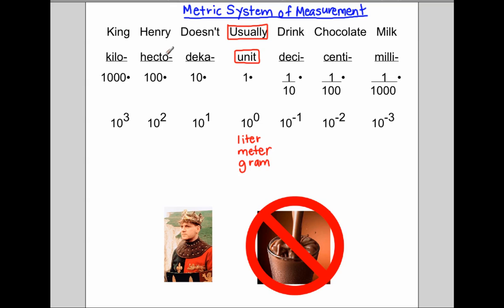These actually stand for the prefixes for each unit. So kilo is a thousand times. That's what the K stands for. Hecto is a prefix that means a hundred times the unit.